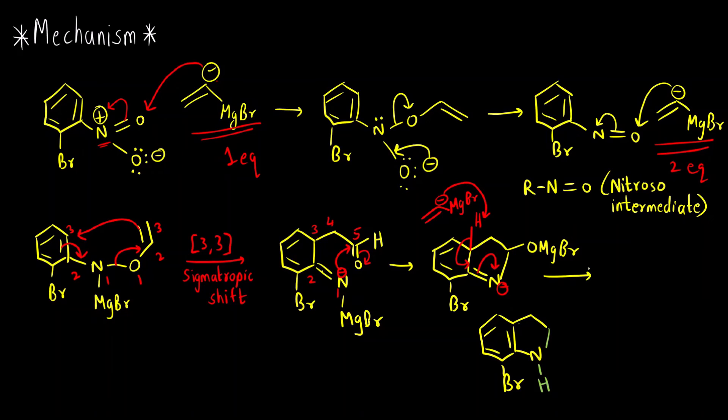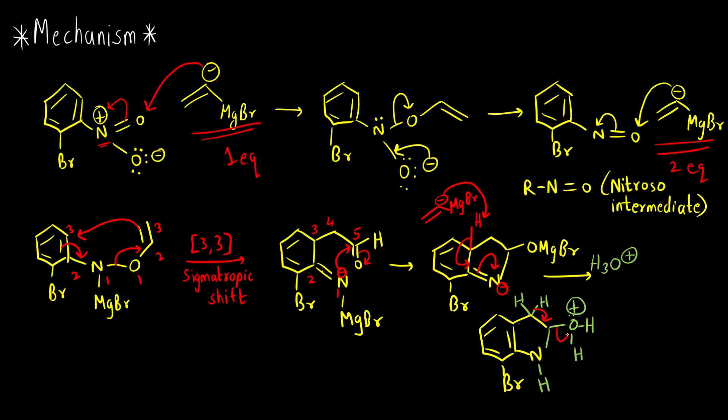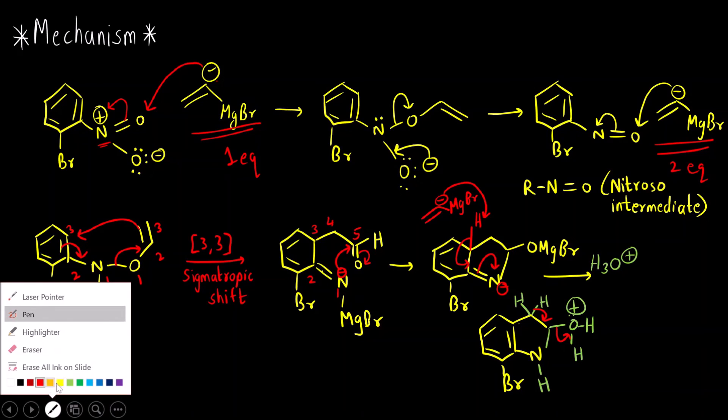And here O-MgBr, what we are doing in the last step is workup, acidic workup. So what will happen? This will form OH. Then this OH also, it is present in an acidic medium. So the lone pair of oxygen will attack the H plus ion. What we will get is OH2 plus. And then what is the last step? Last step is loss of water molecule. This will come here. We will get a double bond and water will go away as a leaving group. And we will get our final product.